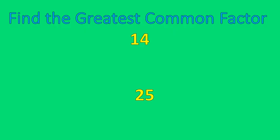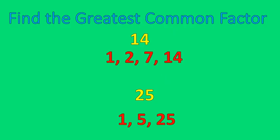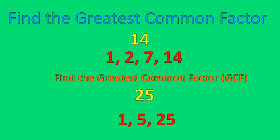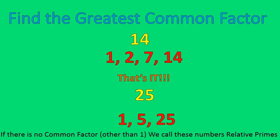Here's a question — find the greatest common factor of 14 and 25. Go ahead and pause the recording and try that one on your own. That one was a little bit of a trick question. We do the same steps listing the factors, but there are no common factors between 14 and 25. When there is no common factor other than 1, we call these numbers relative primes or relatively prime to each other. The numbers are not prime themselves — both are composite — but compared to each other they are prime because they share no common factor other than 1.